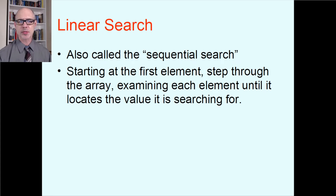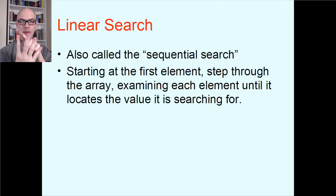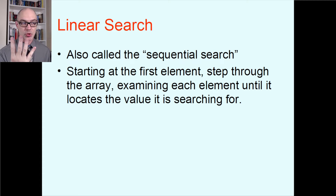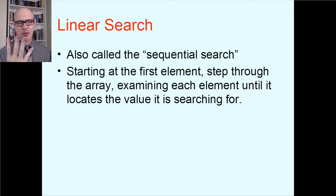Linear search — also called the sequential search — is very simple. You're just going to look at everything in the array one after the other and decide whether that's the one you're looking for. Starting at the first element, you step through the array examining each element until it locates the value you're searching for. If the thing you're looking for is not in the array, you'll have to look at every single thing to determine that, and then report that what you're searching for isn't there.